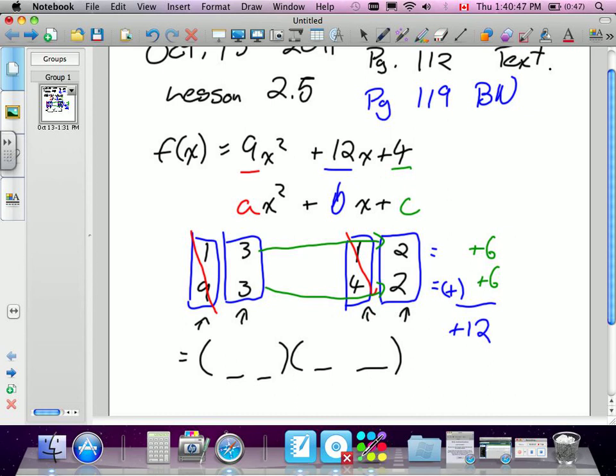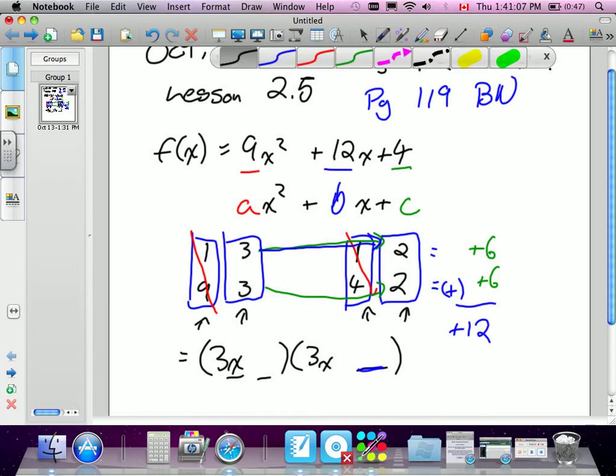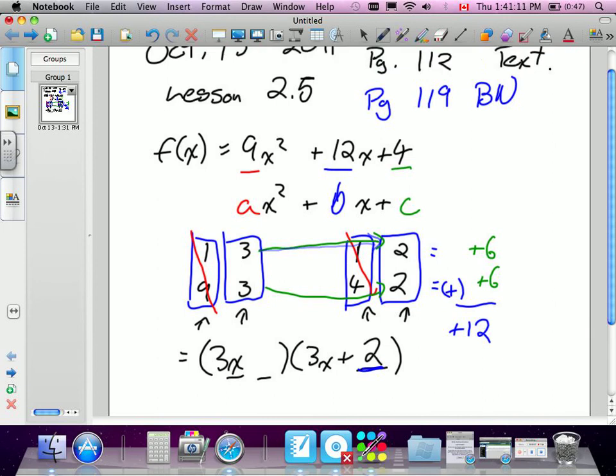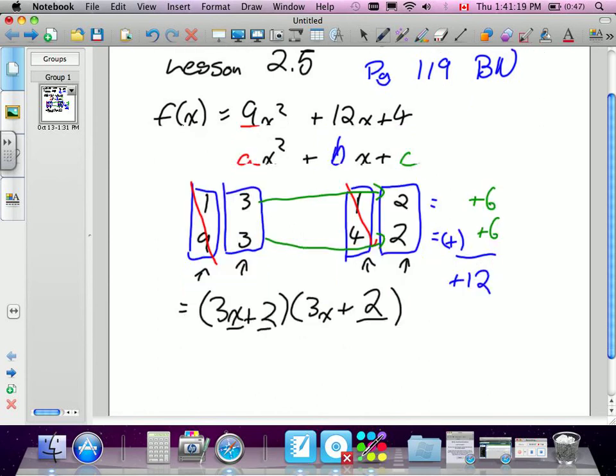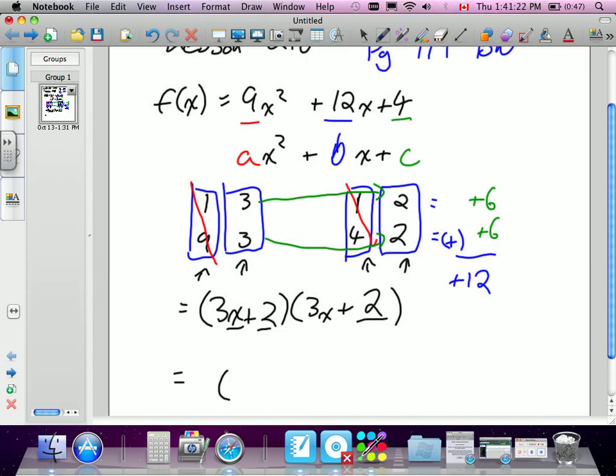So when I go to put them in their columns, my first terms are going to be 3x in both columns. And if you remember, that's a 2. Now, because I multiply 3 by this 2, that 2 has to go in the opposite column. Is it going to make a difference in this case? No, because they're the exact same numbers. Now, here's the only other step. We've got our 3x plus 2, 3x plus 2. Because they're the exact same thing, I want you to combine it to one bracket. 3x plus 2, squared. That's it.